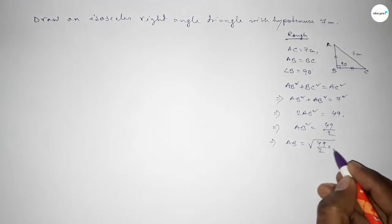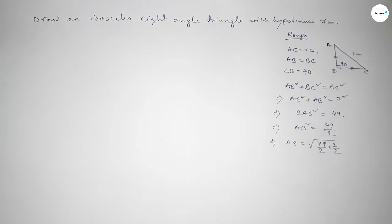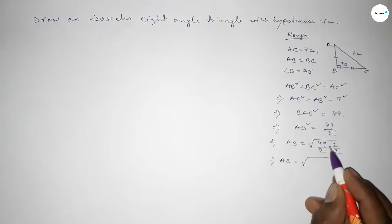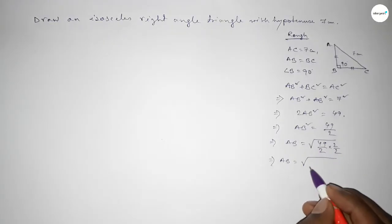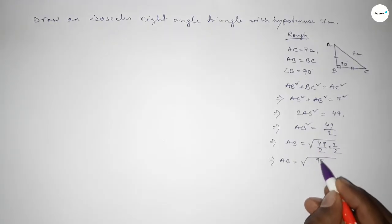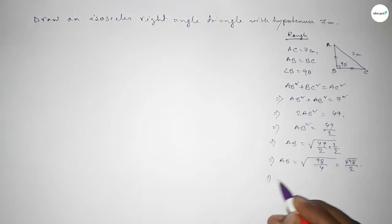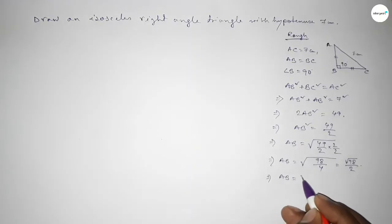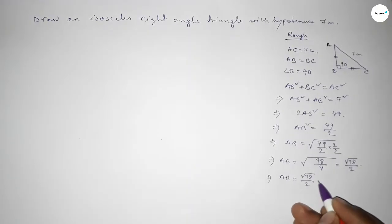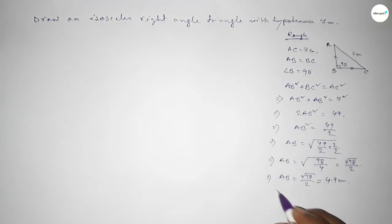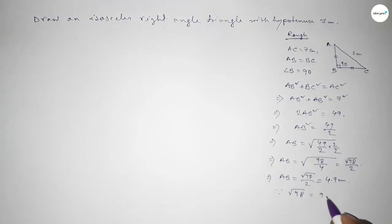So AB equals the square root of 49 over 2. To remove the square root from the denominator, we multiply top and bottom by 2, giving AB equals √98 over 2. Since √98 is approximately 9.89, AB is approximately 4.9 centimeters.